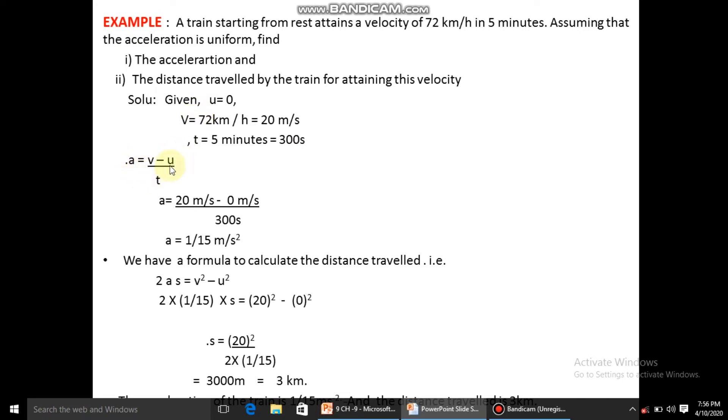We will use the formula a equals v minus u by t, which is the formula for acceleration. We'll put the values and get the answer. To calculate the distance travelled by the train, we use the formula where initial velocity, final velocity and acceleration is given: 2as = v² - u². The acceleration of the train is 1/15 meter per second squared, and the distance covered is 3000 meters, that is 3 kilometers.